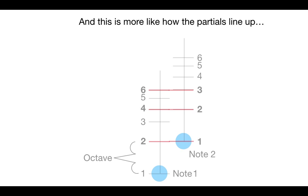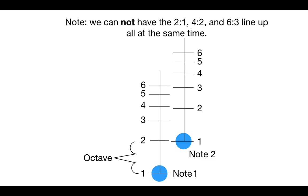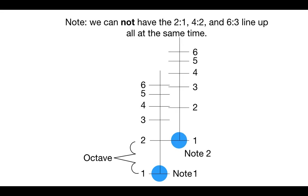This is more how the partials line up. Note that we cannot have a 2-1, 4-2, and 6-3 line up all at the same time.